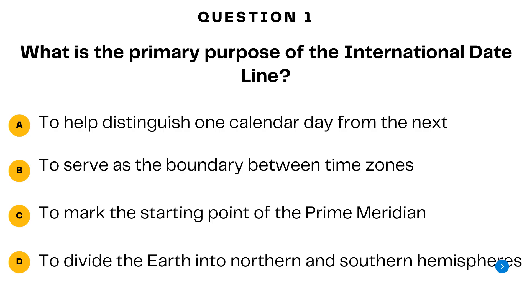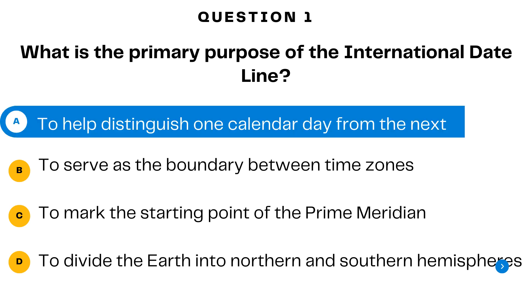Let's begin question number one. What is the primary purpose of the international dateline? A. To help distinguish one calendar day from the next. B. To serve as the boundary between time zones. C. To mark the starting point of the prime meridian. D. To divide the earth into northern and southern hemispheres. The answer is A — to help distinguish one calendar day from the next.